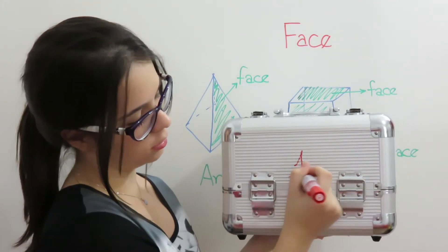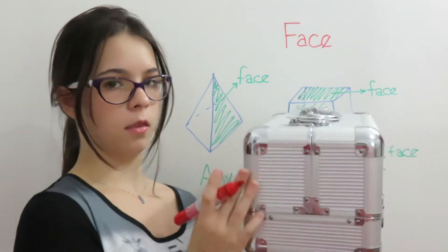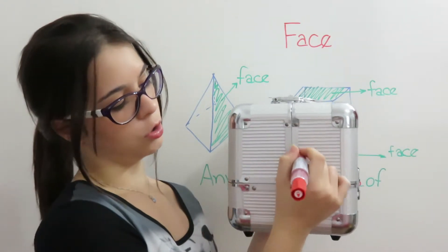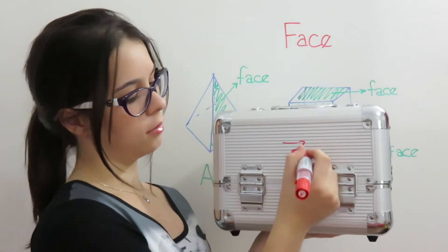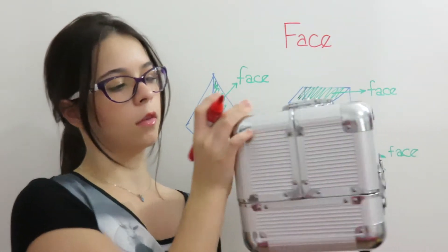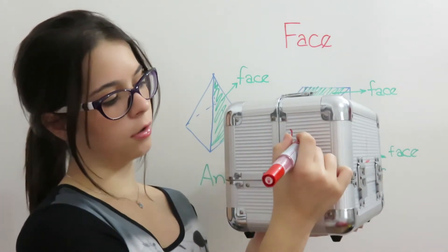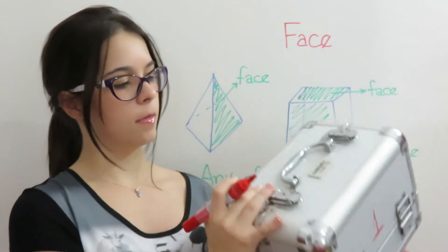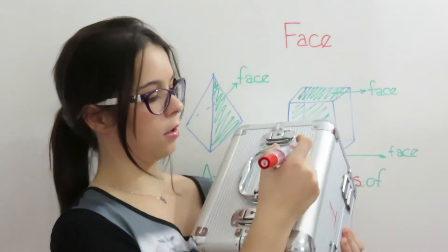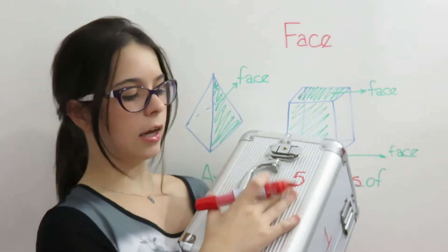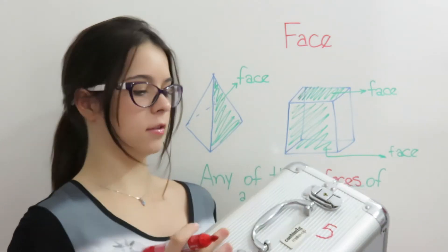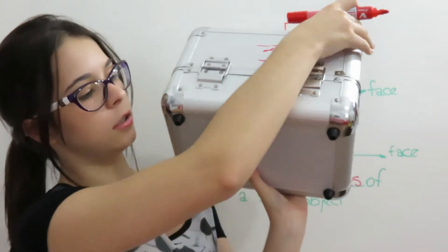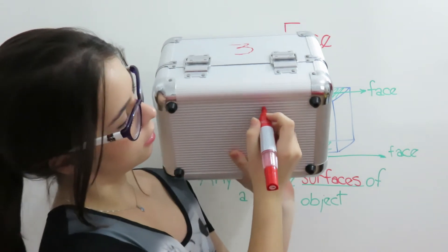This one. One. Two. Three. Four. This one. Five. Can I count this one? Yes, you can. It's any of the surfaces. And the last one. Six.